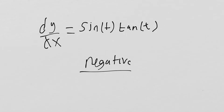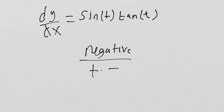What is going to produce a negative slope? A positive times a negative, or a negative times a positive — both of those are going to result in a negative.